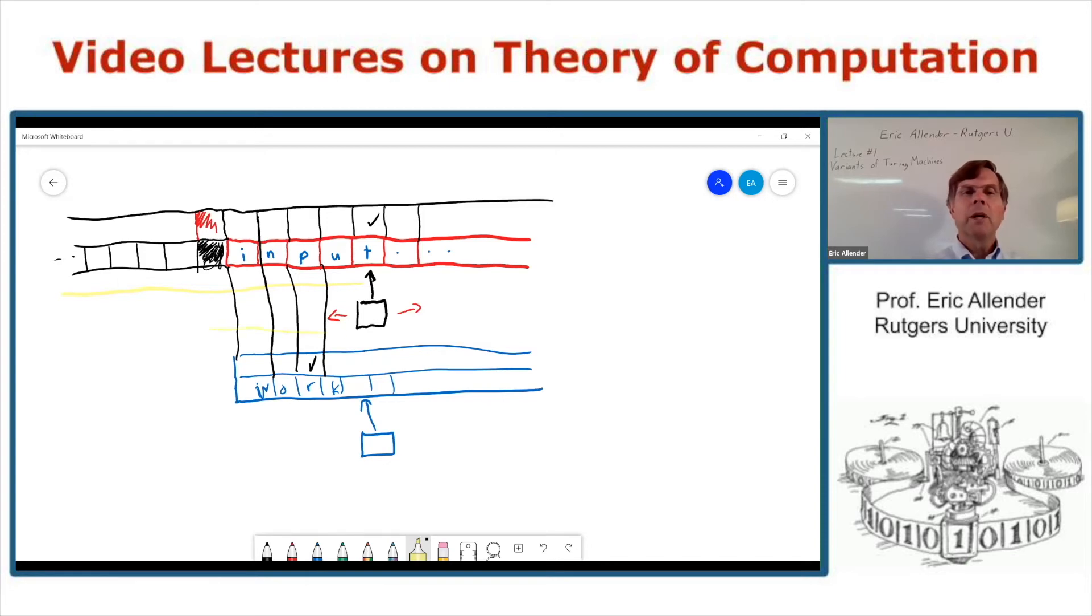We can just scan all the way across and see what is being scanned by each of the symbols. And then after I've seen what all of those heads are scanning, then I can move back across the tape and do an update, let's say moving that head that direction, actually moving this head to the other direction, and changing symbols as need be.